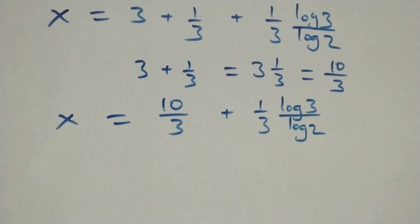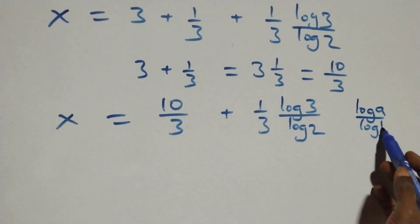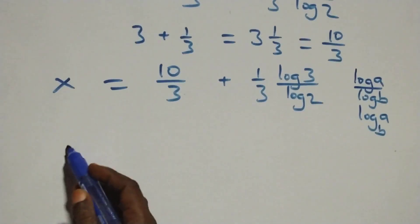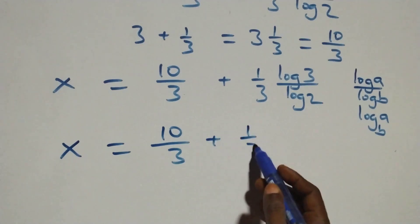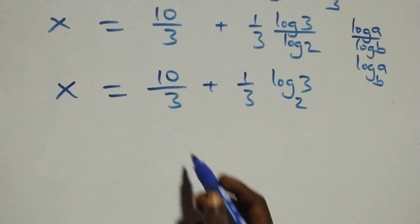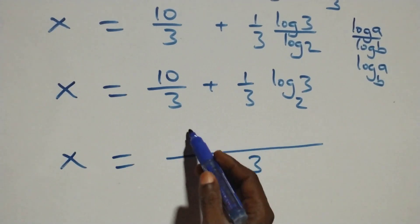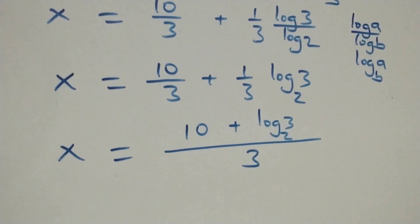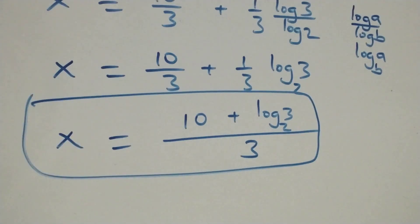Applying the change of base formula — log a over log b is the same as log base b of a — we get x equals 10 over 3 plus one third log base 2 of 3. Bringing this together as one fraction: x equals 10 plus log base 2 of 3, all over 3.